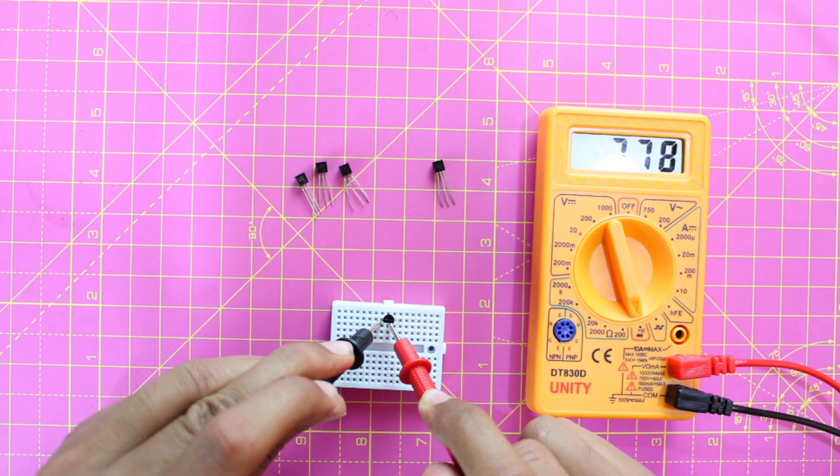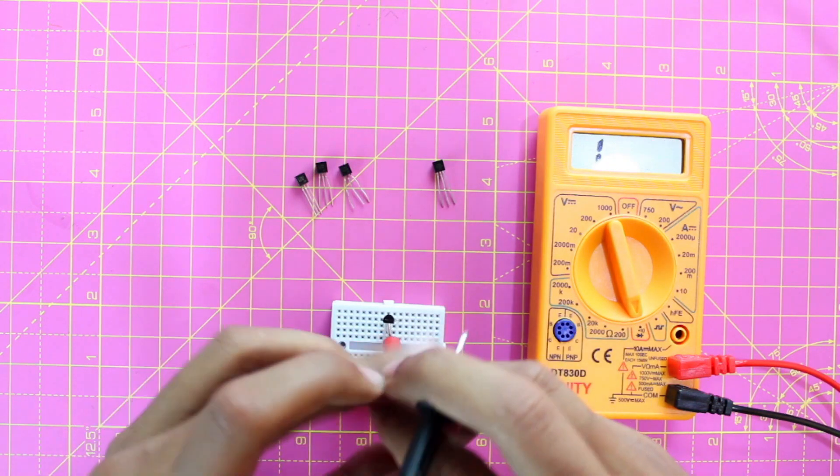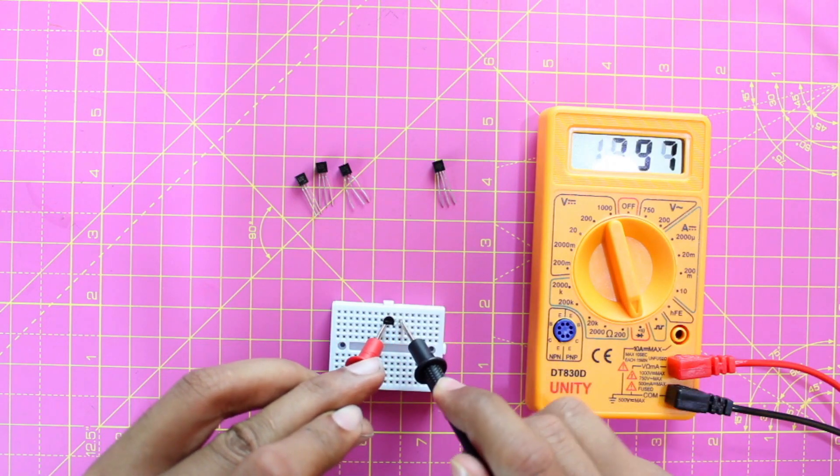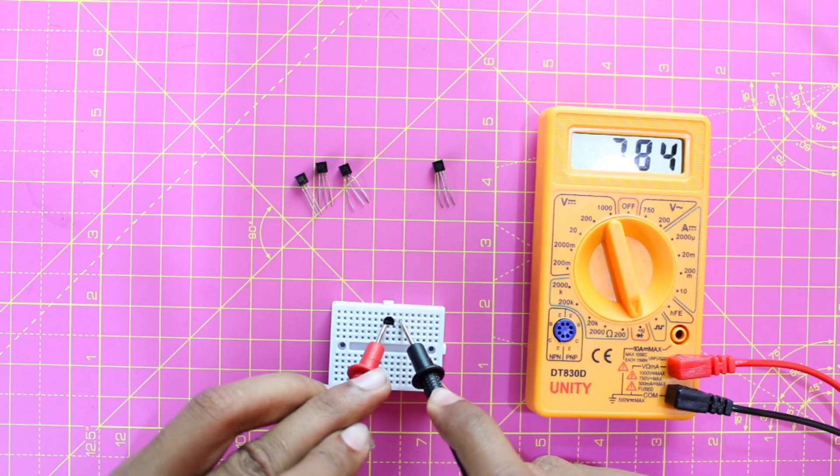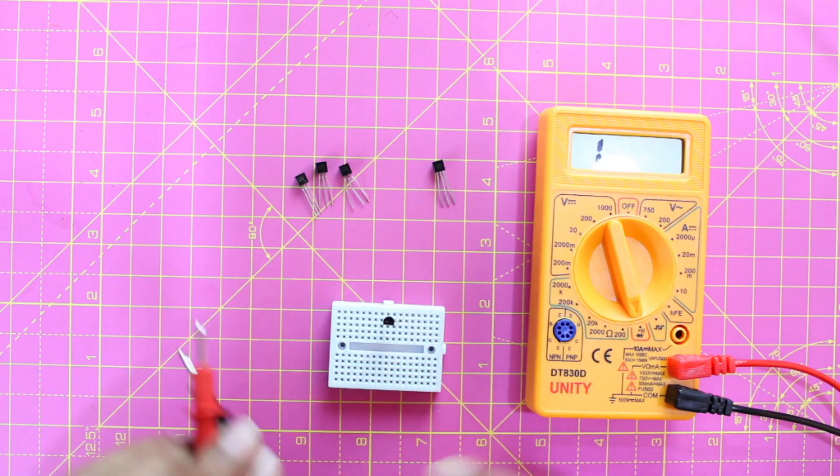So now I'm getting a voltage drop between the first two pins and I know that the second pin is positive. I'll just shift the probe and check if there is a voltage drop on the second two pins as well. Yes, so I am getting a voltage drop on both the pins, so this transistor is also working.